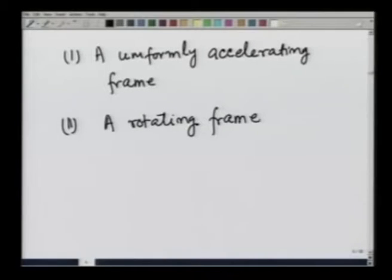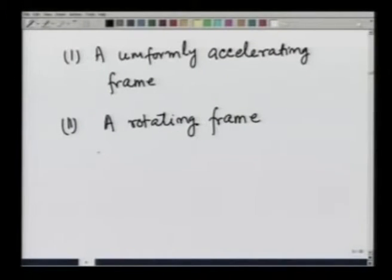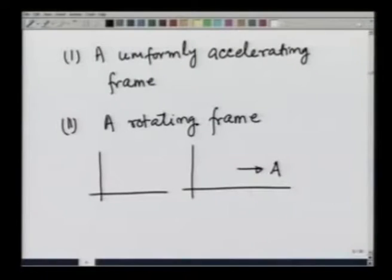How acceleration can arise in such frames without an apparent force can be seen from a uniformly accelerating frame. Suppose you are in a car which is accelerating in a particular direction with acceleration a. As it is moving, you will see other things outside the car accelerating backwards, although there may be no force on those objects. You see them as if they are accelerating backwards without any force being applied on them.